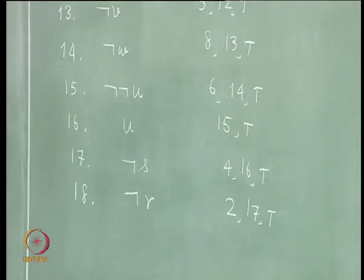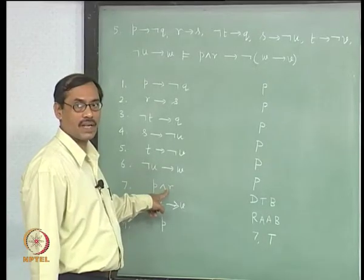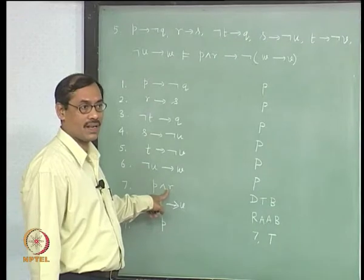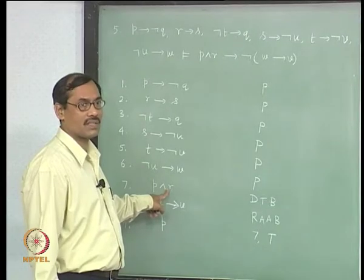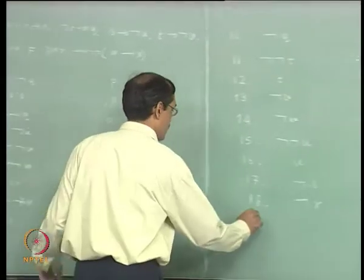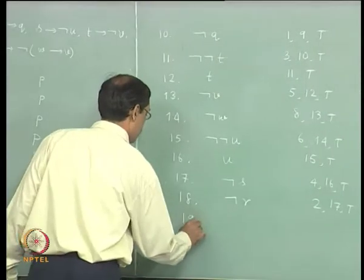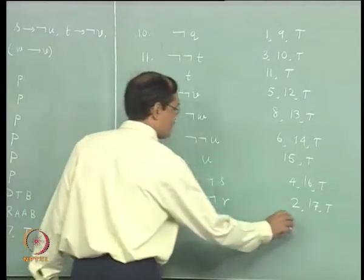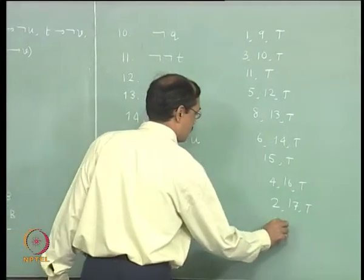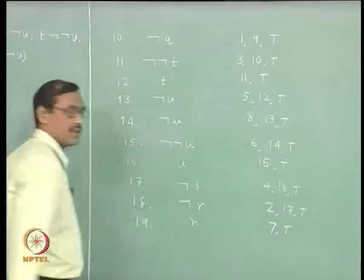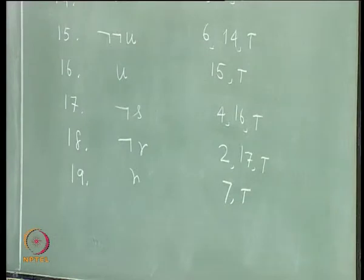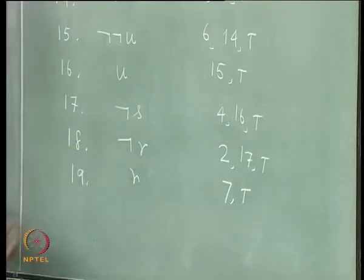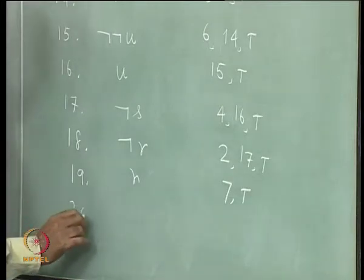Next, from line 7, p and r will give us r by elimination — that would give us a contradiction. So we write line 19 as r, that comes from line 7 by elimination. We have got r, we have got not r, therefore bottom.